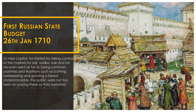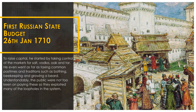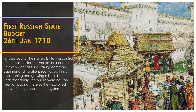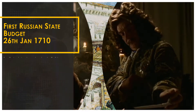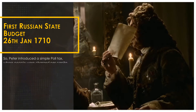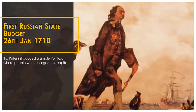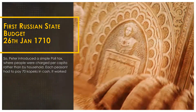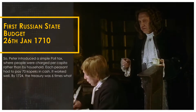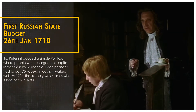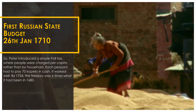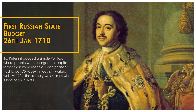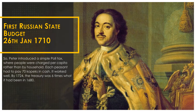Understandably, the public were not too keen on paying these, so they exploited many of the loopholes in the system. So Peter introduced a simple poll tax, where people were charged per capita rather than per household. Each peasant had to pay 70 copecks in cash. It worked well. By 1724, the treasury was six times what it had been in 1680.